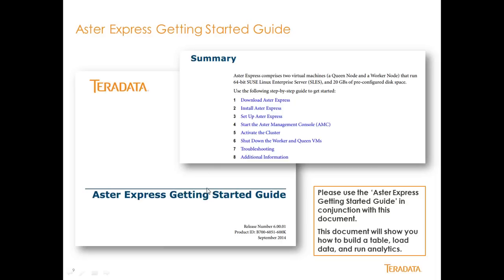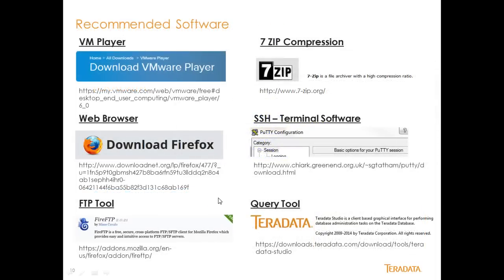I do recommend that you give the Getting Started Guide a good read before you get started — it is an excellent resource for getting through the installation process and the best approach to getting things going in your Aster environment. I recommend a VMware player; you will need that. There is a link below the actual product here that allows you to download it, and all these products listed are completely free of charge. You will also need 7-Zip to unzip the Aster VMware images.